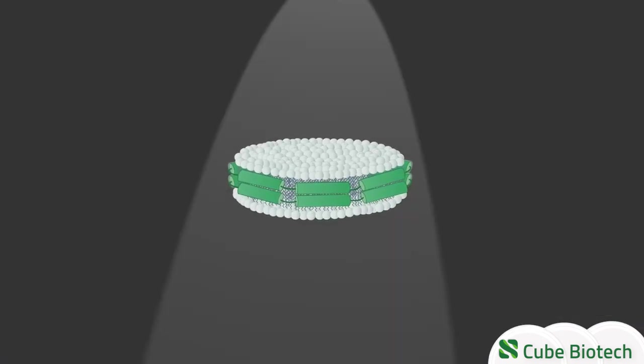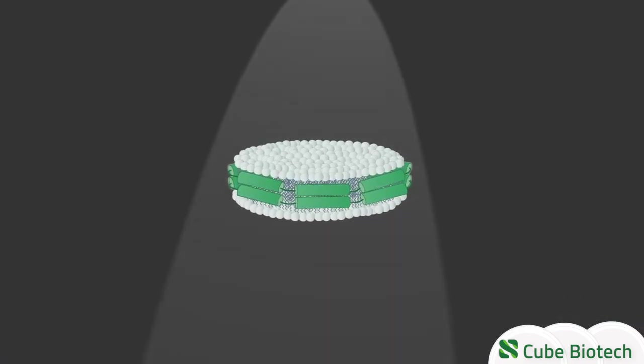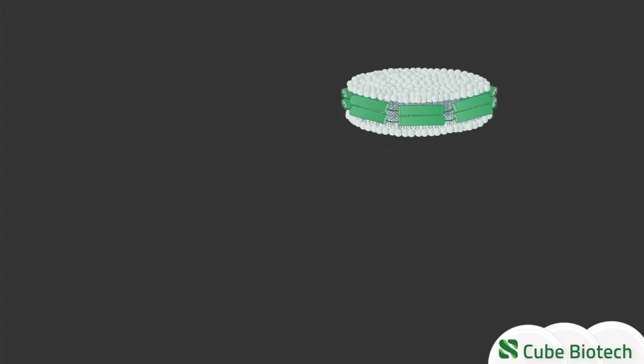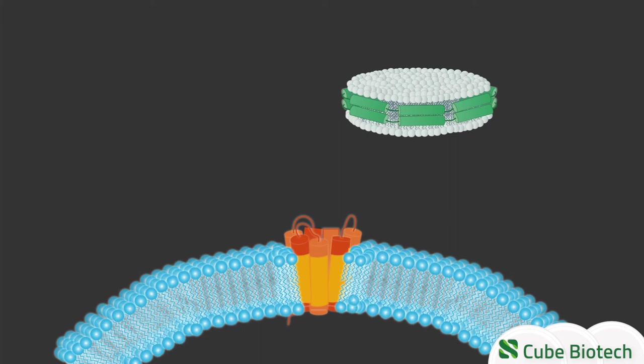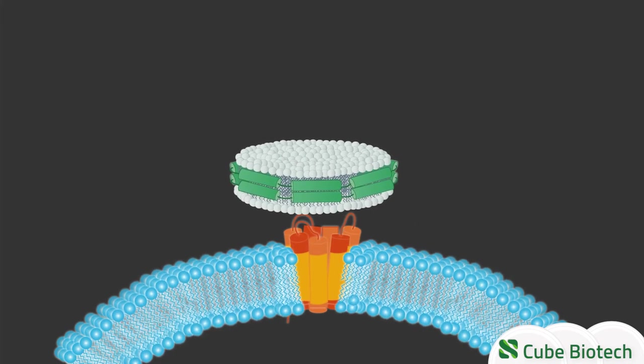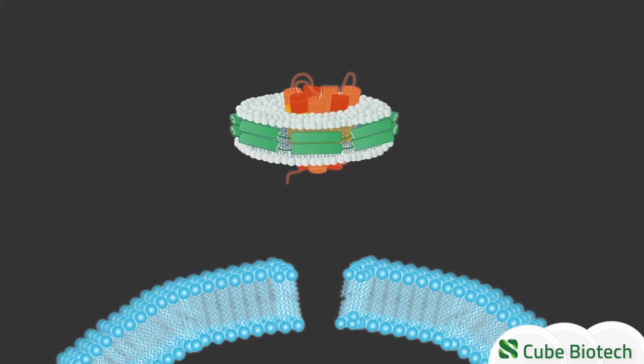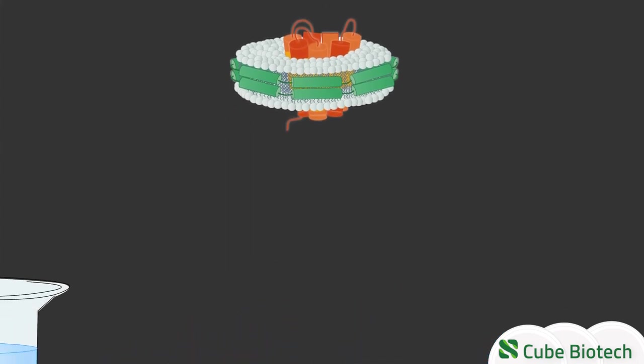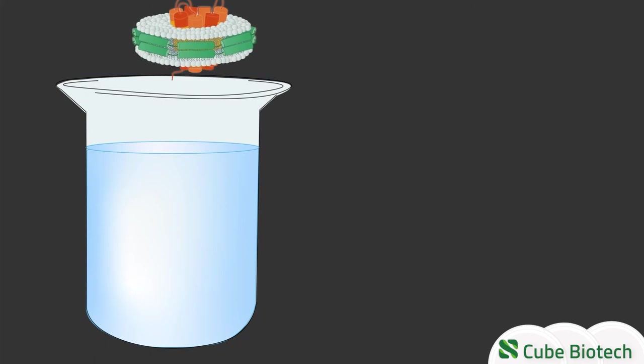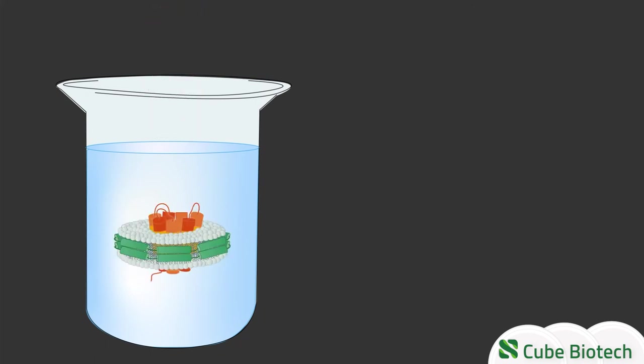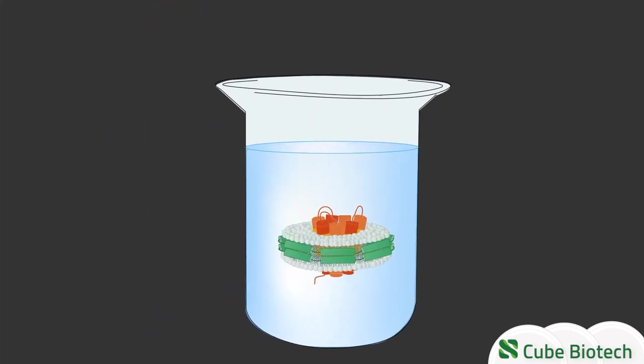This is where nanodiscs enter the stage. Nanodiscs imitate the amphipathic environment of a lipid bilayer. This allows membrane proteins to be removed from the cell membrane whilst maintaining their original physiological properties. Additionally, nanodiscs are highly soluble in aqueous solutions, which allows the membrane proteins inside them to be kept in solution without detergents.